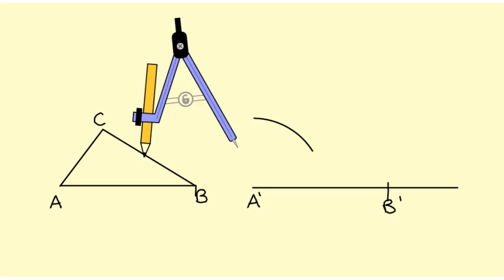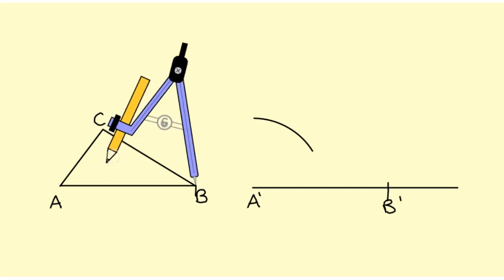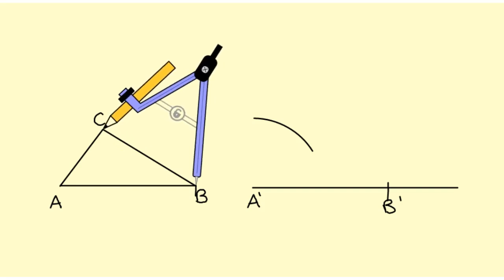Next, I'm going to measure side BC. I take the point of my compass, put it on B, and open my compass up so that it measures BC.